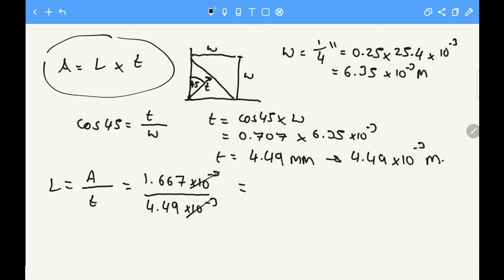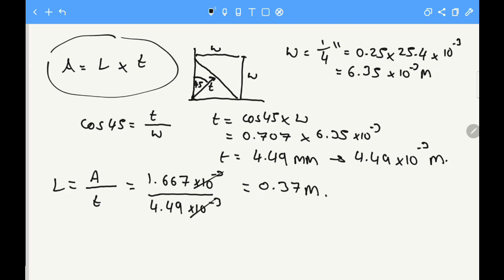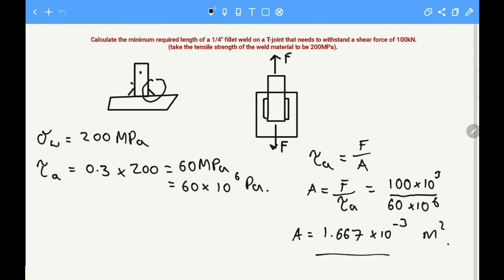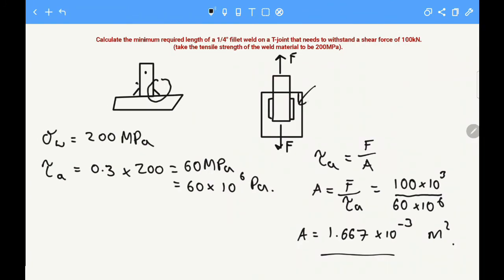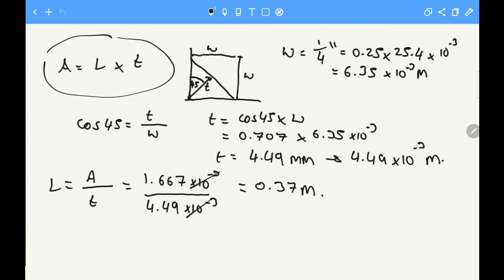If you put that into your calculator, the total length of weld needed is 0.37 meters. But there's one more thing to remember: if we go back to our initial diagram, we have the weld on both sides. So the last thing to do is divide that by 2: 0.37 divided by 2.